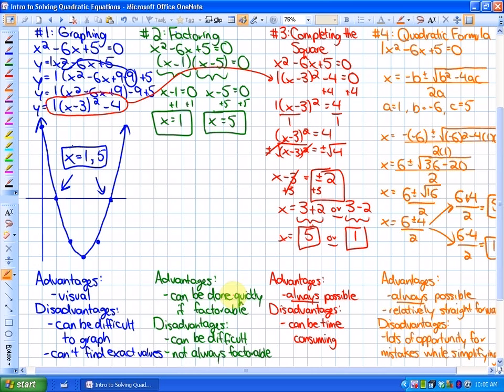Advantages of factoring is it can be done quickly if it's factorable. Disadvantages is that it can be difficult to factor, and quadratic equations are not always factorable.